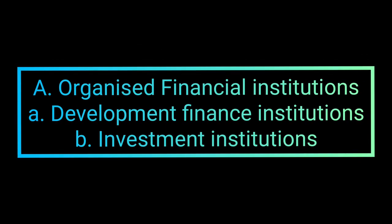The organized financial institutions are those institutions where developed institutions like IDBI, IFCI, etc. are included. The main financial institutions included here are, number one, developmental financial institutions. They include institutions like the Industrial Development Bank of India or IDBI, IFCI, IRDC, etc.